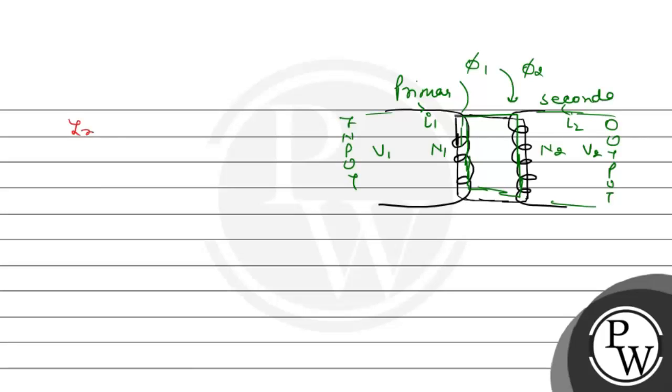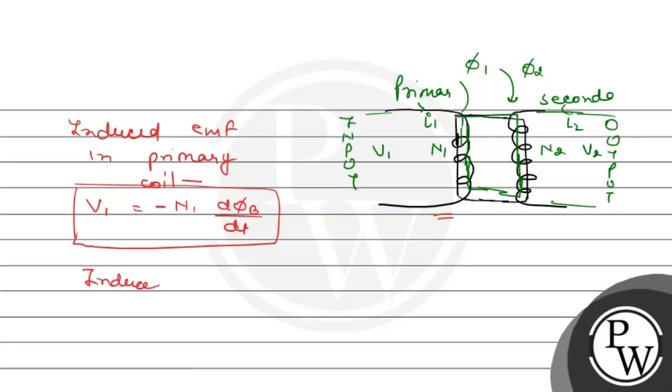This is induced EMF. In the primary coil, induced EMF by Faraday's law becomes V1 equals N1 d(phi)/dt. By Lenz law, it's negative. Induced EMF in secondary is V2 equals minus N2 d(phi)/dt.